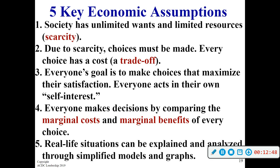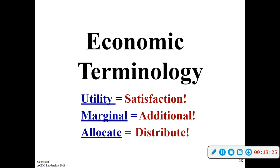Number five: trade-off situations can be explained and analyzed through simplified models and graphs. We do a lot of graphing — unit one doesn't have much, just one major graph, but once we get to unit two and beyond, there's a good bit of graphing and analyzing. A couple of key terms: utility is the satisfaction or benefit you get from something — the happiness you get out of it. Marginal means add one and look for the change. Allocate means to distribute — how are we going to distribute these scarce resources throughout society?